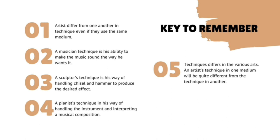Key to remember: art differs from one another in technique even if the same medium is used. A musician's technique is his ability to make music sound the way he wants it. A sculptor's technique is his way of handling chisel and hammer to produce the desired effect. A pianist's technique is his way of handling the instrument and interpreting a musical composition. Techniques differ across various arts and artist techniques in one medium will be quite different from the technique in another medium.